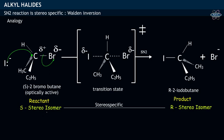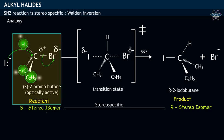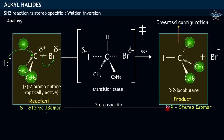Here, three groups around the carbon center — that is hydrogen, methyl, and ethyl — in the reactant take inverted positions in the product; that is, 100% inversion takes place in the product.